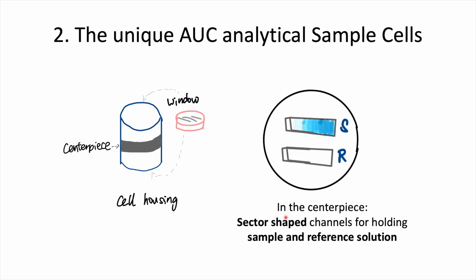Sandwiched in between the windows is a centerpiece. On the right you can see the top-down view of the centerpiece. The centerpiece has two channels: one channel holds our sample — the solution we actually want to study — and the other channel holds the reference liquid, which is normally the buffer our sample is dissolved in. You will also notice that these channels are sector-shaped, with a wider end facing the outside of the rotor and a narrower end facing the inside of the rotor. This shape is important because the sample can move radially outward while the cell is spinning at very high speed.